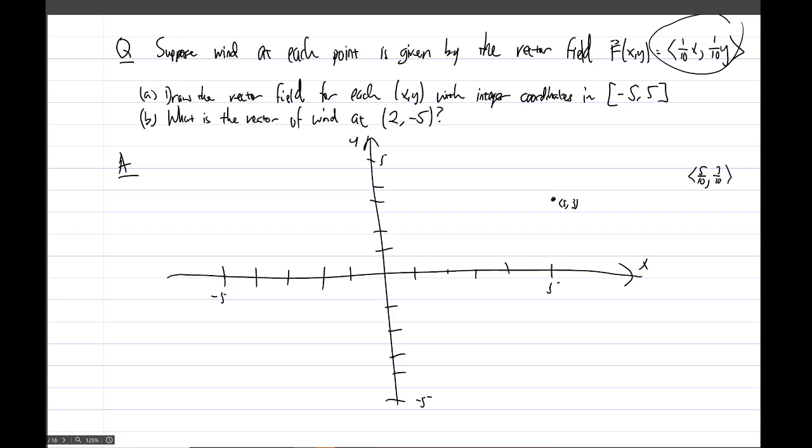so 0.5 comma 0.3. So it's a small vector, half unit to the right, and then about a third unit up. So roughly like that, tiny little vector. So at each point, draw in such a vector. And this is a little bit of work, but I think it's good to practice this and to try it.